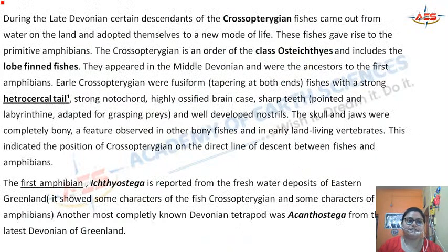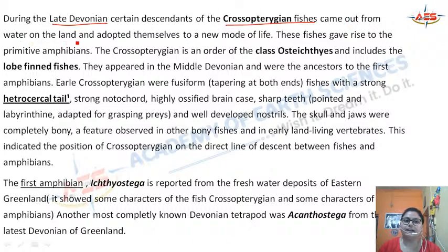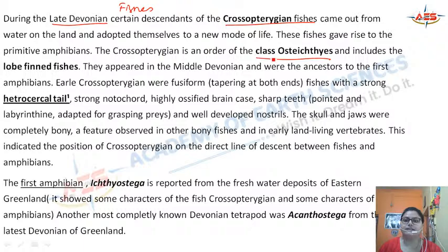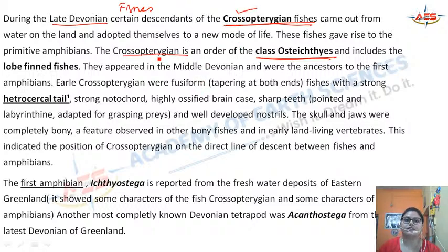During the late Devonian, certain descendants of the crossopterygian fishes came out from the water onto the land and adapted themselves to a new mode of life. The amphibians didn't appear suddenly — they evolved from the crossopterygian fishes, which form an order within the class Osteichthyes. These crossopterygian fishes are also known as the lobe-finned fishes and are the link between fish and amphibians.